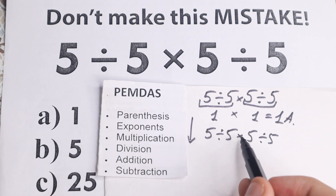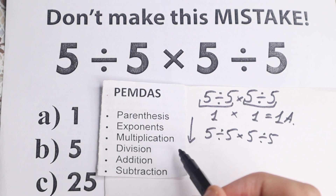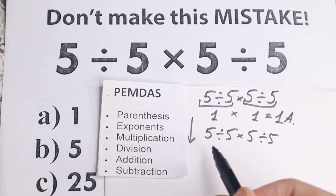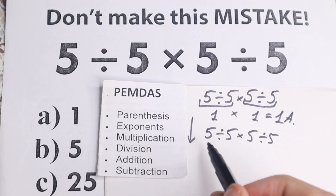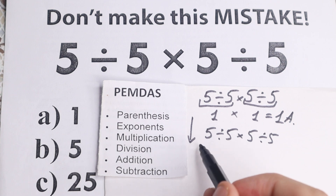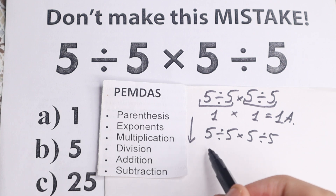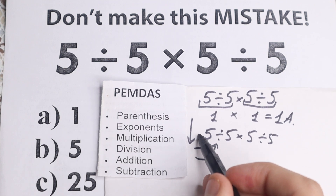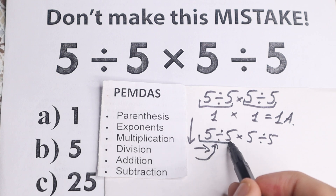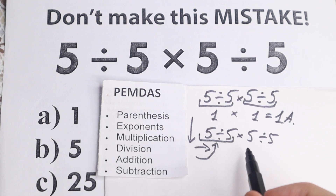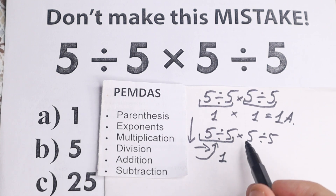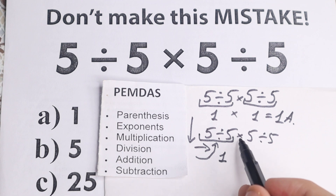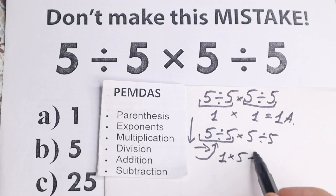When handling the multiplication and division group, we need to scan what is the first sign from left to right. From left to right, the first sign is division. So we divide 5 divided by 5, which equals 1. Then we rewrite the expression: 1 times 5, divided by 5. I hope you understand this step — we simply scan what is the first sign from left to right.